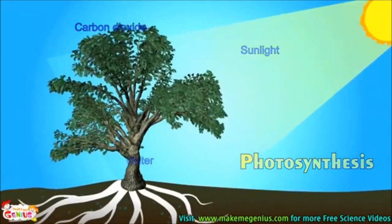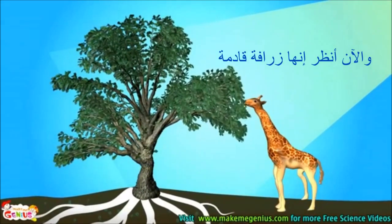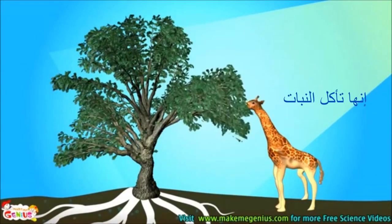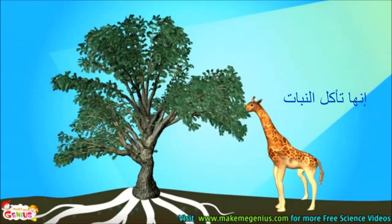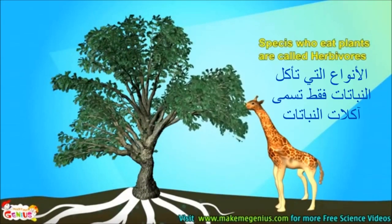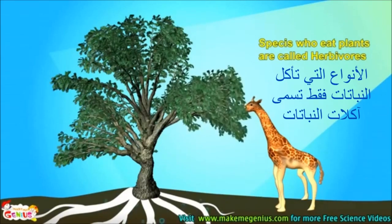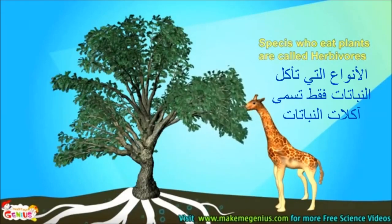All other species, like animals and we humans, are dependent on plants. A giraffe is coming — it is eating the plant. Species who only eat plants are called herbivores.